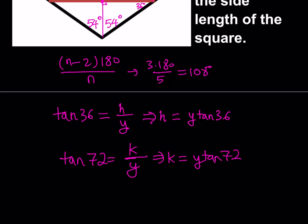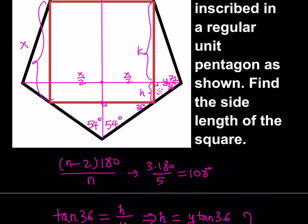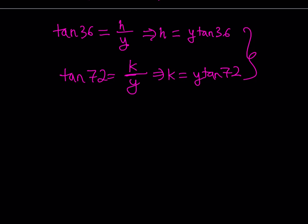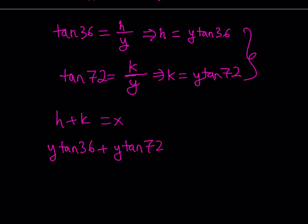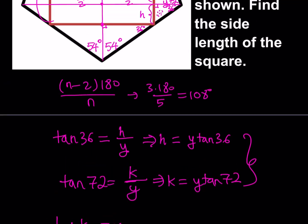It's important to express two different things in terms of the same variable, because now we're going to put it together. We know that h plus k equals x, since those make up the side length of the square. So h equals y·tan36 and k equals y·tan72, and their sum equals x. From here you can factor and express y in terms of x: y equals x over (tangent 36 plus tangent 72).